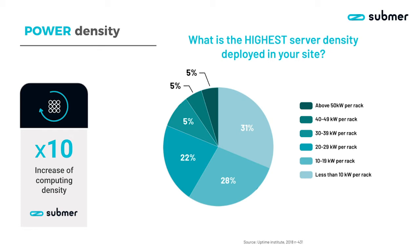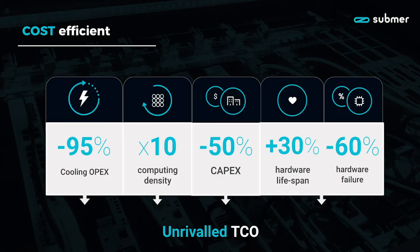The business case will dramatically improve by using immersion cooling. Your OPEX cost will go down, your compute density goes up, your CAPEX investment goes down, your hardware lifespan goes up, and your hardware failure rate goes down. So overall, a lot of very good improvements to the business case. Your total cost of ownership will go down and your return on investment will go up.